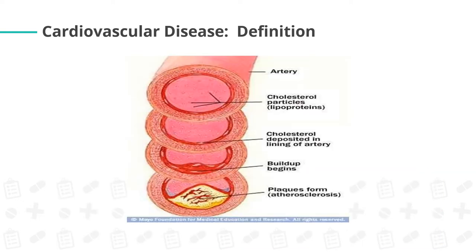This is the progression of cardiovascular disease. When we eat something fatty, the fat or cholesterol particles — otherwise called lipoproteins — are circulated through the blood. Further increase of intake causes cholesterol to be deposited in the lining of the artery until buildup begins. Further buildup results in plaques being formed, called atherosclerosis. This blocks normal blood circulation, resulting in increased blood pressure, increased total cholesterol, and increased LDL.